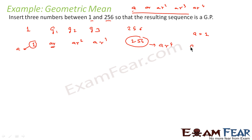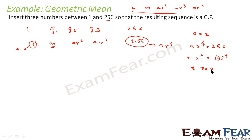We can also say ar⁴ is equal to 256. Putting a equal to 1, we get r⁴ equal to 256. Now 256 is nothing but 4 to the power 4, since 4 squared is 16 and 16 squared is 256. So r⁴ equals 4⁴, which gives r equal to plus or minus 4.